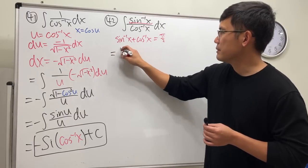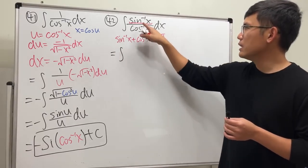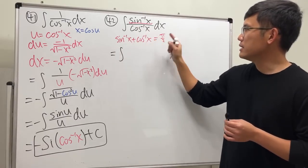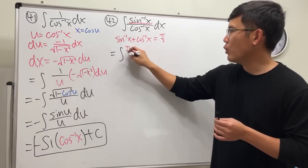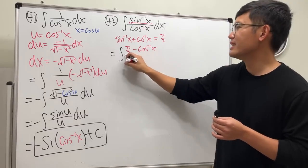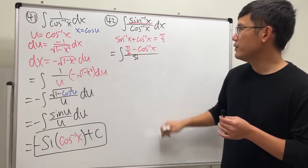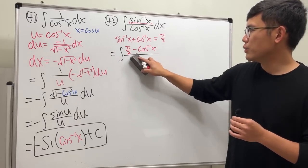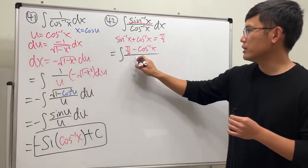So this right here is the same integral. I want this. So this is the same as pi over 2 minus inverse cosine of x. Yes, so that's the key. If you do it this way, then you can split the fraction and you will be done.